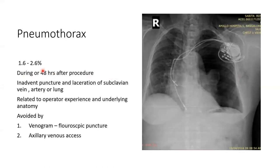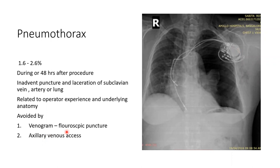Pneumothorax occurs in 1.5% to 2.5% of procedures and can be detected during or up to 48 hours after the procedure. It may be asymptomatic and detected only on chest X-ray. It results from inadvertent puncture or laceration of the subclavian vein, artery, or lung, and is related to operator experience and underlying anatomy. To prevent it, we aim for the axillary vein before it joins the cephalic vein at the outer border of the first rib. If the vein is not visible, a venogram should be performed first.